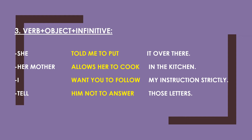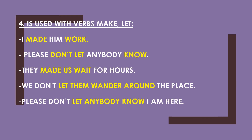The same with 'him'. At this time we use the negator 'not'. After the object 'him', we put the infinitive 'to answer', inserted by the negator 'not': I tell him not to answer those matters. The bare infinitive is used with causative verbs like make and let. For example: I made him work. Please don't let anybody know. They made us wait for hours. We don't let them wander around the place.